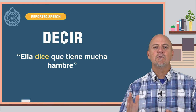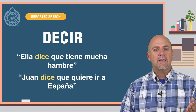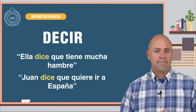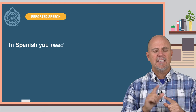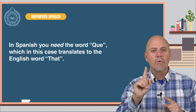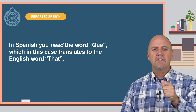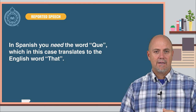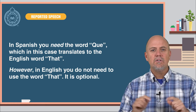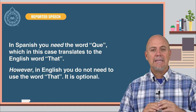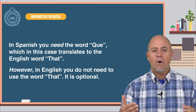For example: Ella dice que tiene mucha hambre. Juan dice que quiere ir a España. One very important thing to note: in Spanish, you need the word que, which in this case translates to the English word that. However, in English, you do not need to use the word that — it is optional.